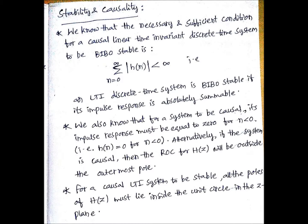We also know that for a system to be causal, its impulse response must be equal to 0 for n less than 0. That means the signal should not exist for negative values of time, that is h(n) equals 0 for n less than 0.